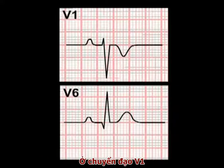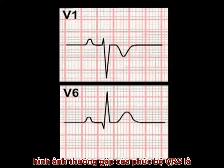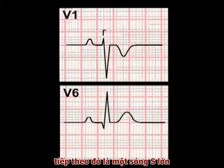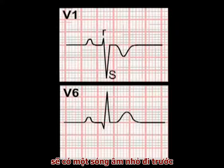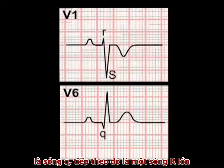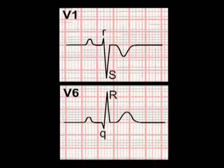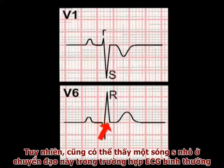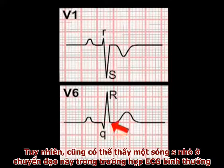In lead V1, the classical morphology of the QRS complex is a small R-wave followed by a larger S-wave. While in lead V6, an initial small negative deflection — a Q-wave — is followed by a large R-wave. In the example shown here, there is no S-wave present in lead V6, although a small S-wave is seen in this lead in many normal ECGs.